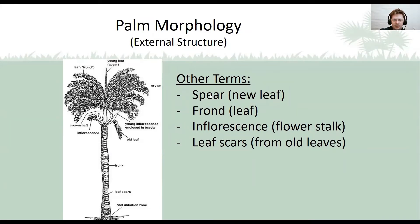Some other features and common names to be aware of in palm morphology: the spear, which is a leaf that basically hasn't been able to unfurl yet; the leaf, also known as a frond; the crown shaft we talked about; inflorescence, which is the flowering part — the stalk the flowers are on. On the trunk, you have leaf scars that go across them, which are very distinct in a lot of palms. All of these can potentially be identifying features to help differentiate different types of palms from one another.